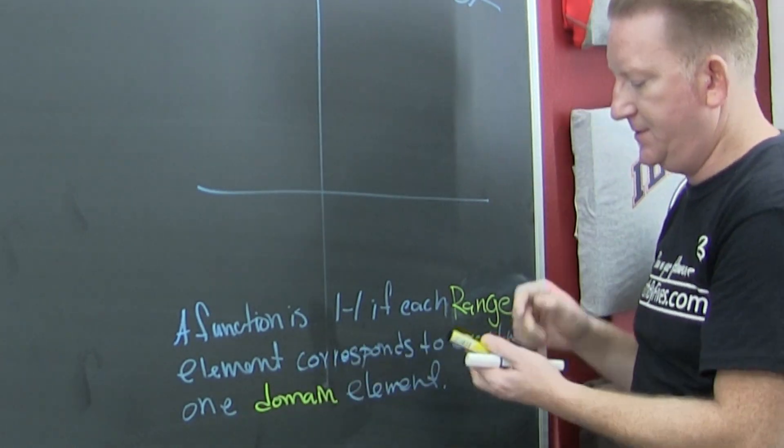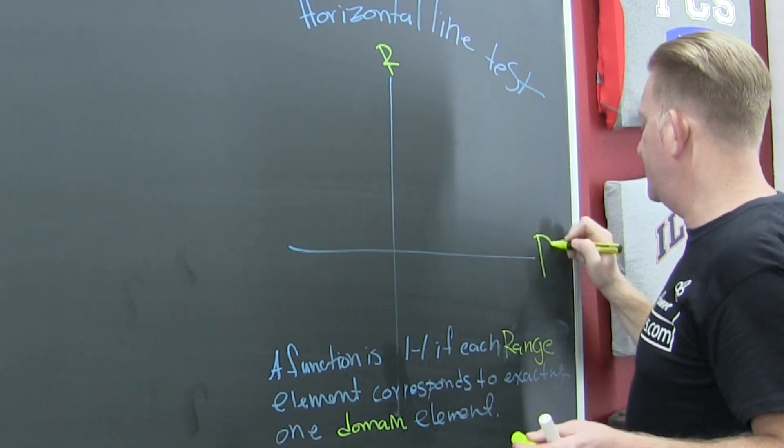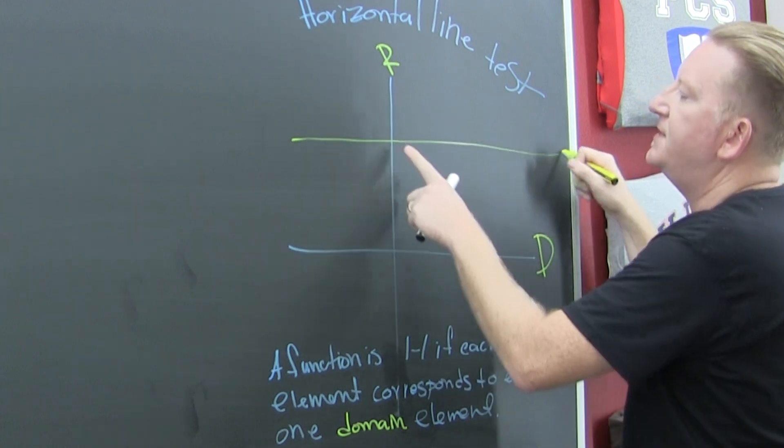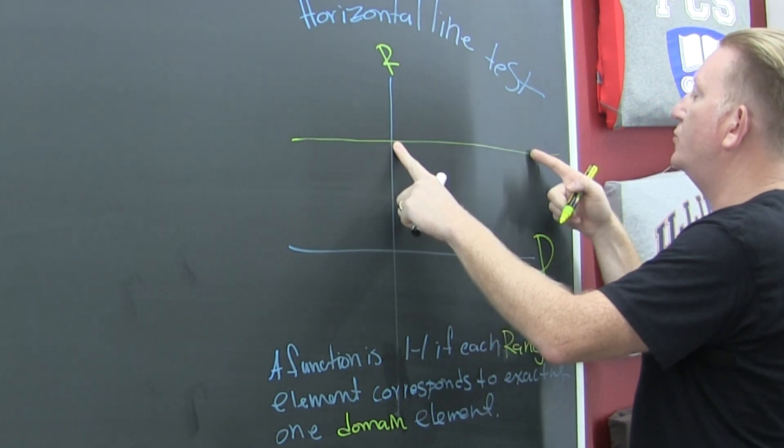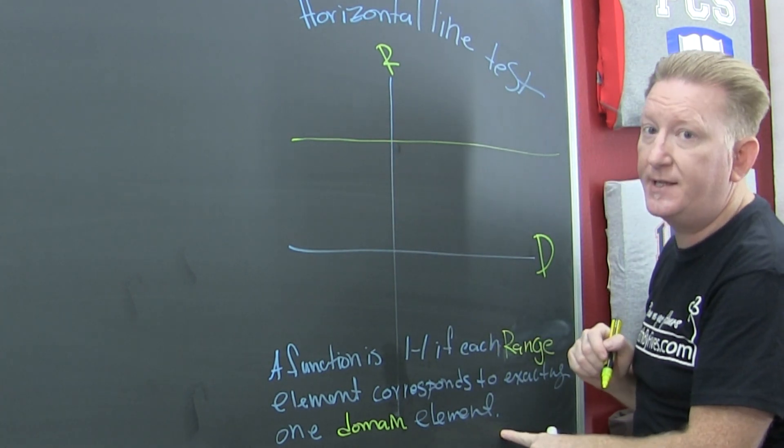You're going to want to see this as the range and this as the domain, so you're using the horizontal line test to see if each y value corresponds to exactly one x value. And that's what we're going to be doing.